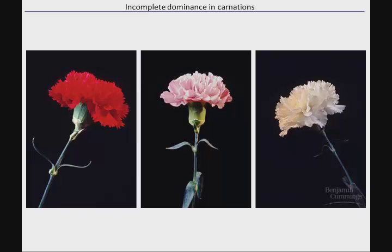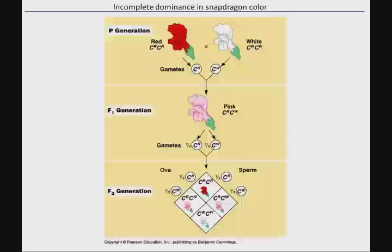You only ever see three phenotypes: red, pink, or white. This is incomplete dominance, meaning the heterozygote has a unique phenotype that is intermediary between the two homozygotes.